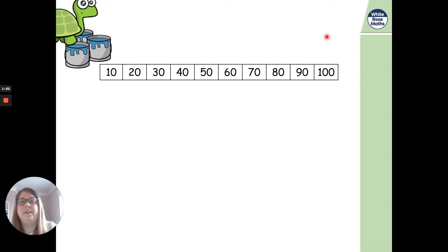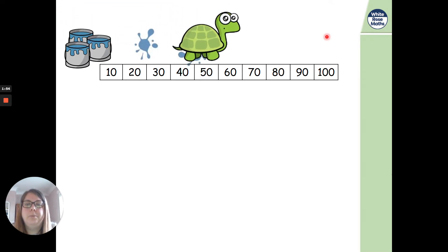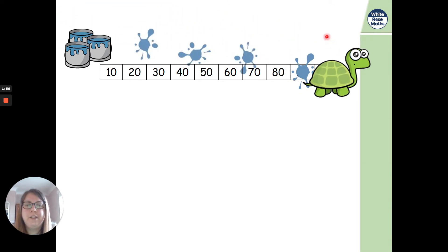Okay, are we ready? So here we have our number track. And Tiny is putting splats all over them. Oh, he's put a splat on one of the numbers. What number has he put a splat on? Have a little think. What comes in between 80 and 100? It is 90, isn't it? Tiny, what's he like? 90.